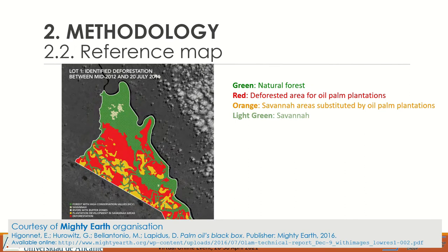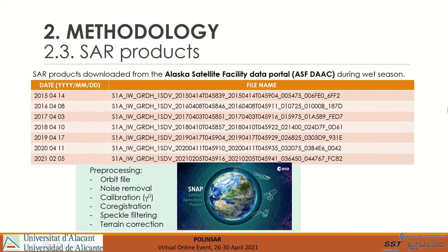On this slide, we can see the reference map used to carry out our research. This image has been provided by Mighty Earth Environmental Organization. Here we detail the sensor products employed, loaded from the Alaska Satellite Facility Data Portal. All the files have been obtained between February and April, so our analysis is focused on the wet season. All the preprocessing steps have been performed using SNAP software.